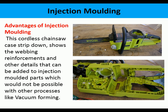A cordless chainsaw stripped down shows the webbing reinforcements, strengthening ribs, and detailed moldings inside. These features would not be possible with other processes like vacuum forming. A product like this has to be made by injection molding.